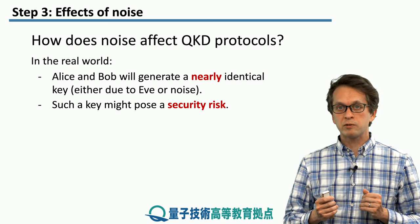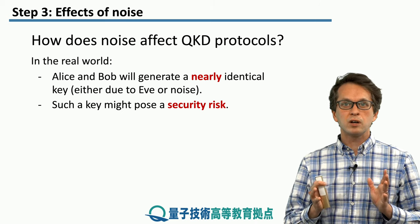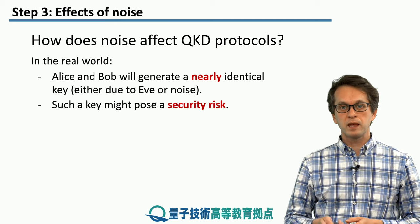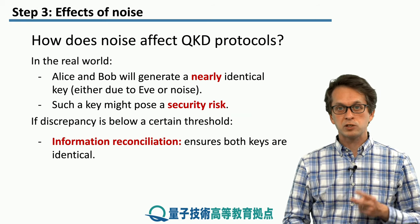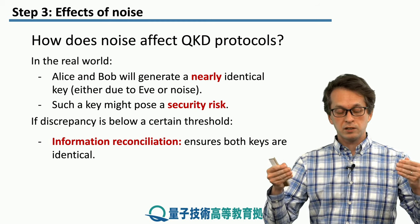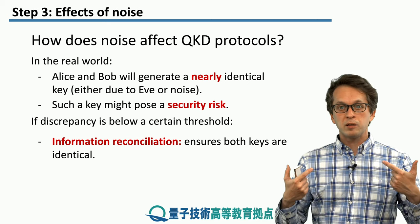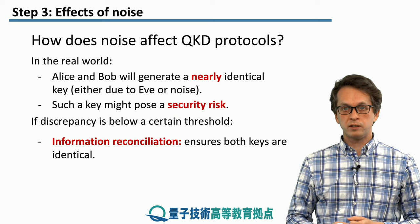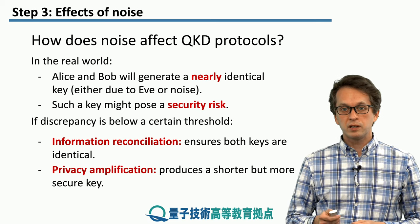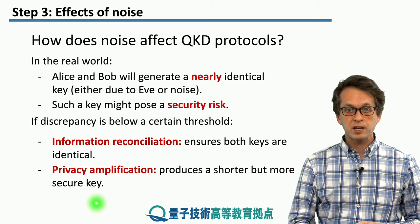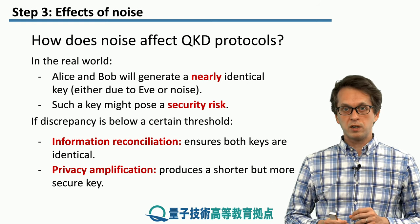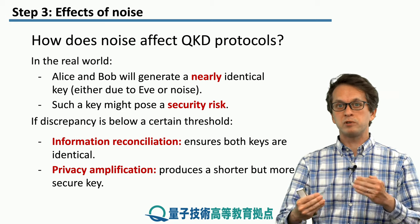Even if the keys are not perfectly correlated, if the correlation is very close to 100%, they can still use it for secret communication. To do this, they engage in two more protocols. The first is information reconciliation, which takes the initial imperfectly correlated key and produces a more correlated one. The second is privacy amplification, where they take the generated secret key and produce a shorter but more secure key, essentially eliminating any possible correlation with Eve.